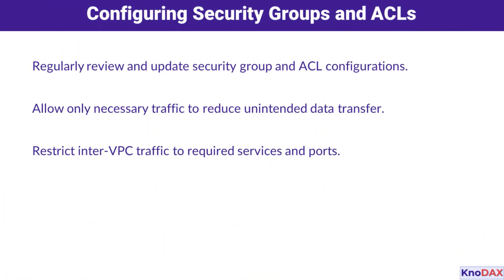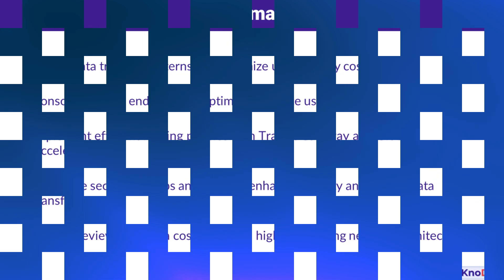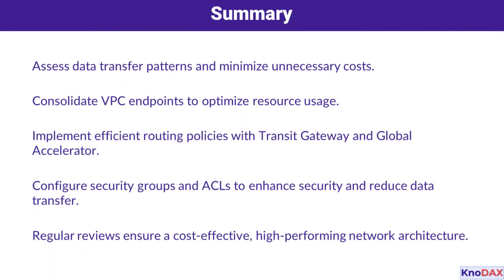Security groups and access control lists, or ACLs, are another important consideration. Regularly reviewing and updating these configurations ensures only necessary traffic flows through your network, reducing unintended data transfers. Additionally, restricting inter-VPC traffic to required services and ports enhances security while saving on costs.